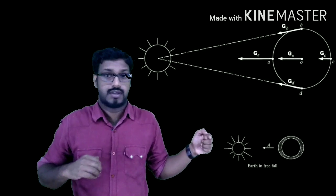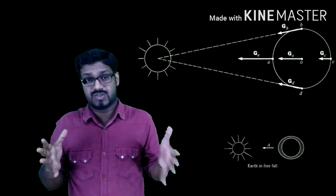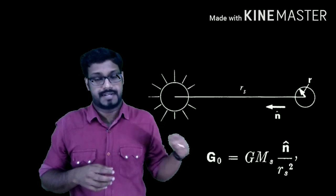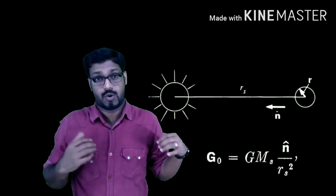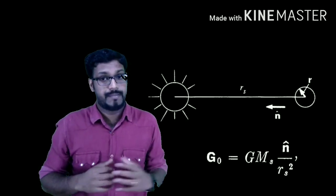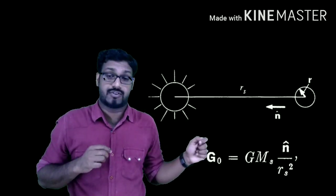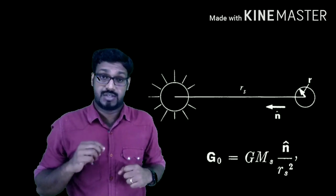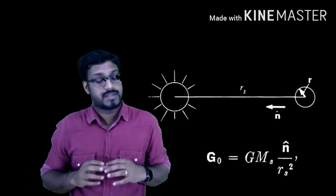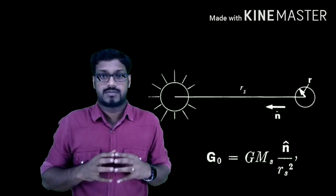Now you can easily calculate the acceleration due to gravity of the Sun at the center of Earth. For this you use Newton's law of gravitation and Newton's second law of motion. Newton's law of gravitation says force equals G·M_s·m divided by r², and Newton's second law says F = ma. Comparing these two, you get the acceleration due to gravity of the Sun at the center of Earth: g₀ = G·M_s / r_s², where M_s is the mass of the Sun and r_s is the distance between the center of the Sun and center of Earth.